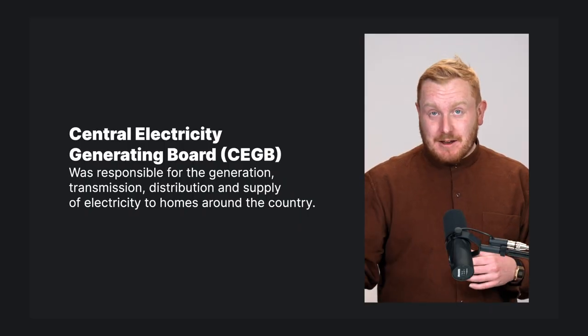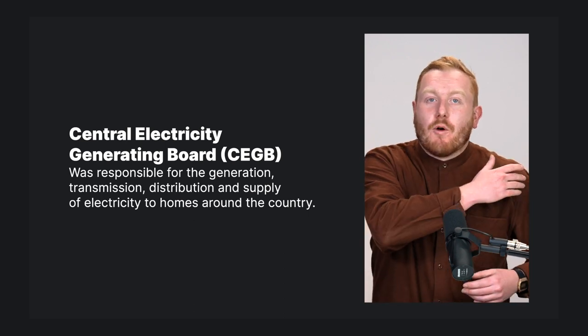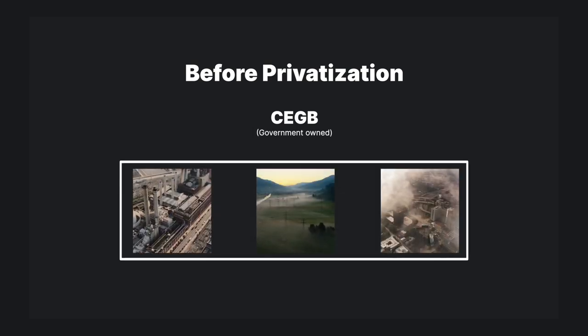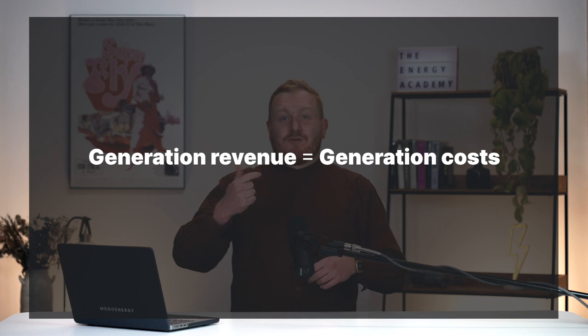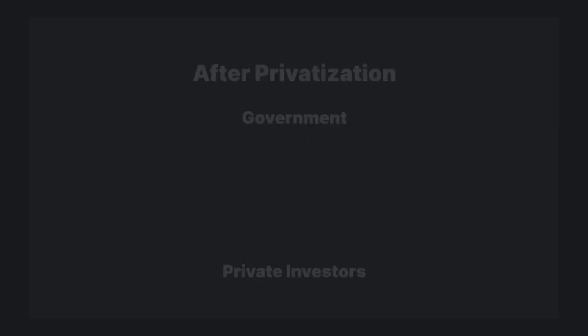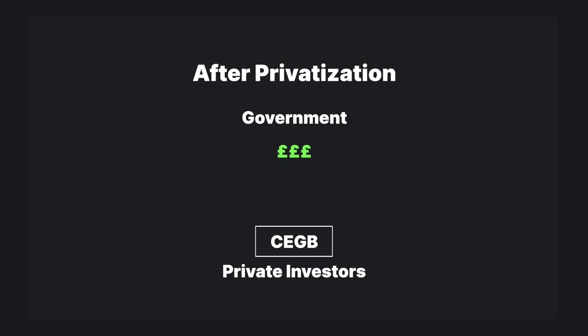Before privatisation, the government looked after and built generators, transmission lines, and distribution lines via the CEGB. The upkeep of all of this was then paid for through your bills and taxes. The production of electricity wasn't primarily profit driven, so in theory the sale of electricity had to just cover the costs of generation and transmission. But in the late 1980s and early 1990s, the government was involved in the process of privatisation — selling off the CEGB and other publicly owned utilities to private investors. This marked a shift in the way that the electricity market in Great Britain was organised.